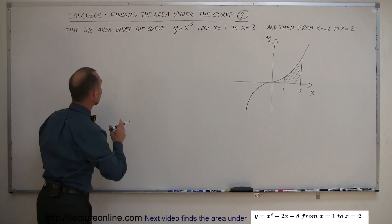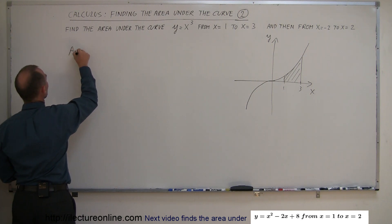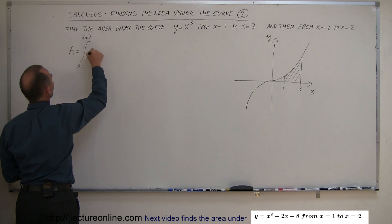It looks very straightforward, so the area under the curve is equal to the integral from x equals 1 to x equals 3 of the function x cubed dx.